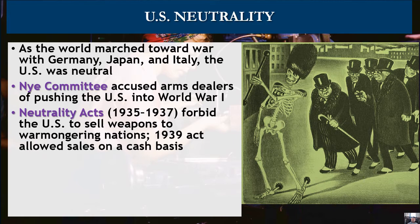There are several of these neutrality acts, and they each have their slight variations. But overall, the intent is the U.S. will not sell weapons to warmongering nations — no weapons for nations in conflict. That will change by 1939, which allows weapons on a cash and carry basis. You would have thought in the midst of the Great Depression there would be eagerness to make some money, but so great is the desire to remain neutral that up until 1939, the answer is no.